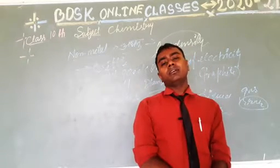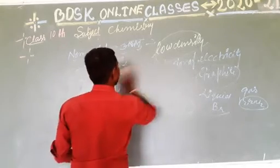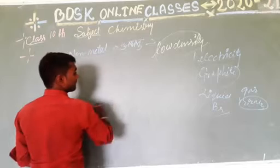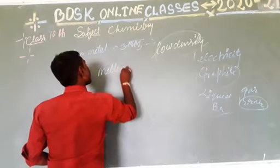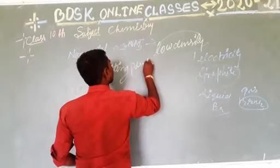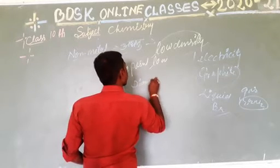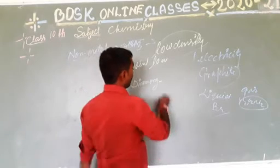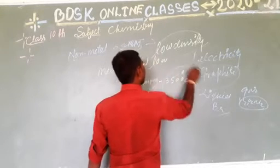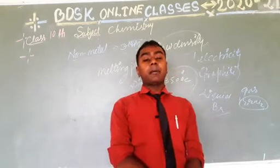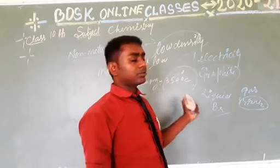The melting point of non-metals is low, except diamond. Diamond is a non-metal that has a melting point of more than 3500 degrees Celsius, which is very high. So these are the physical properties of non-metals.